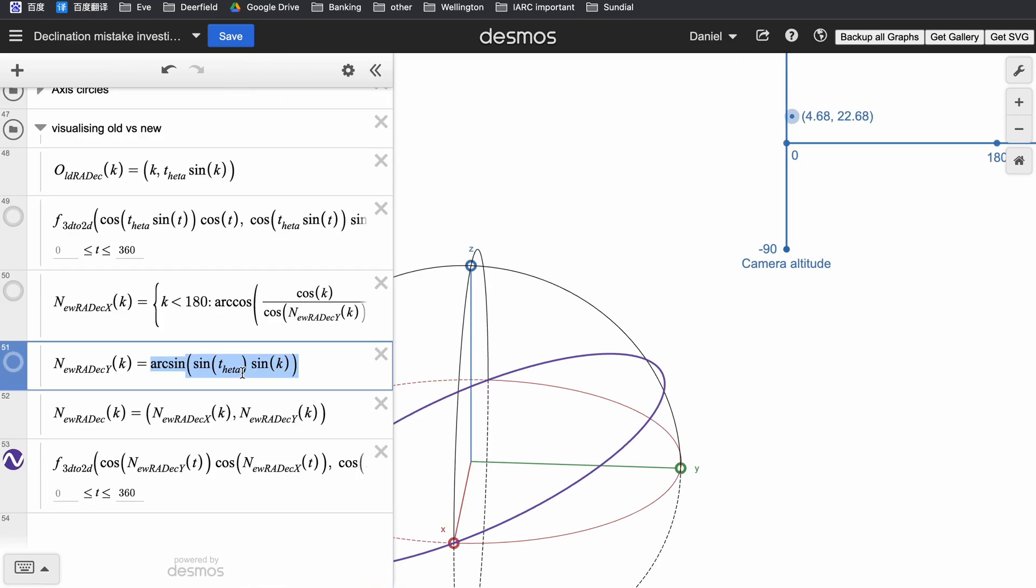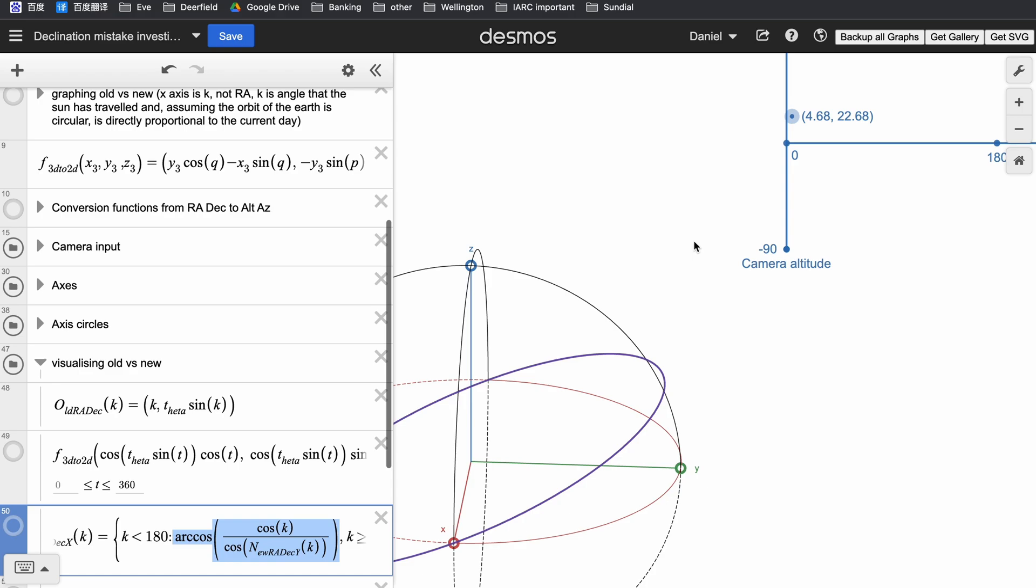Here's what the declination turns out to look like. It's a function of theta and k. And here's what the right ascension turns out to look like. It is a function of the declination and k.